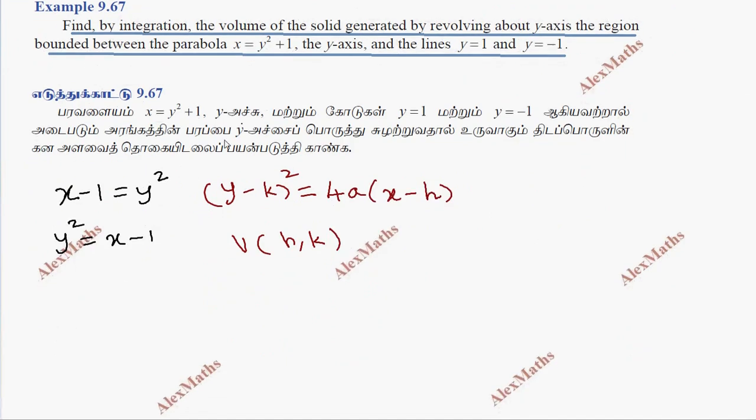In the parabola, the vertex is equal to 1, 0. So h is equal to 1 and k is equal to 0.